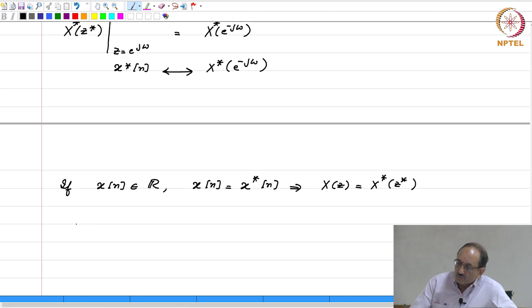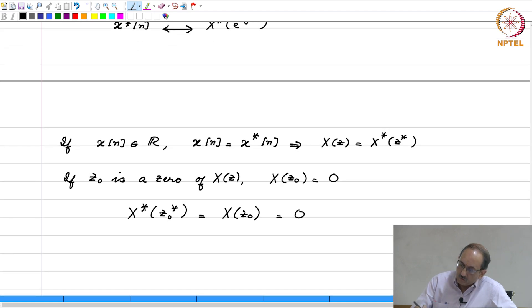And a consequence of this is that, if z naught is a zero of X of z, then X of z naught is zero, but X of z naught is the same as X star of z naught star. So, this is the same as X of z naught and this is therefore zero. Now, if you look at these two, complex conjugate both sides, therefore this becomes X of z naught star, zero complex conjugate is zero. Therefore, this implies that z naught star is also a zero.